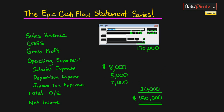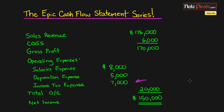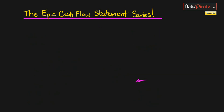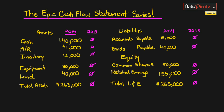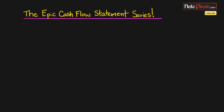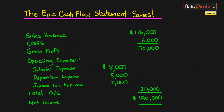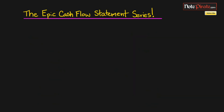To decide whether income tax expense is cash or non-cash, we go to our balance sheet. There is no income tax payable in our liability section, so we're going to assume this was paid using cash. And if it was paid using accounts payable, that's already been adjusted for — so it's going to work out regardless. We can go back and say that income tax has already been factored in.